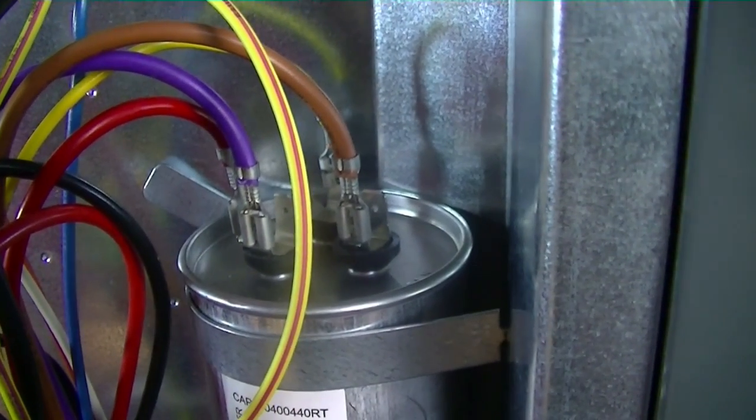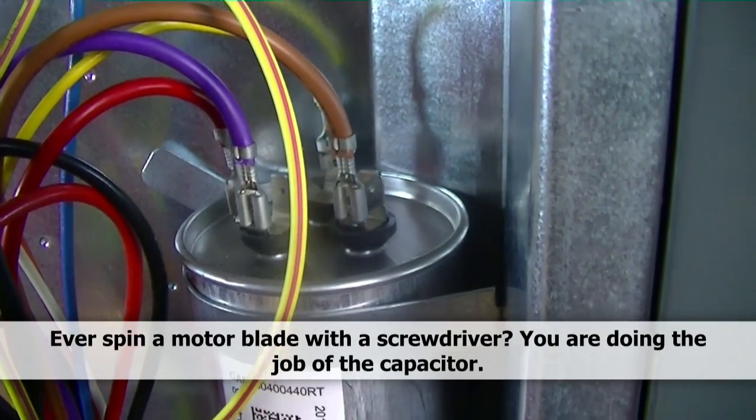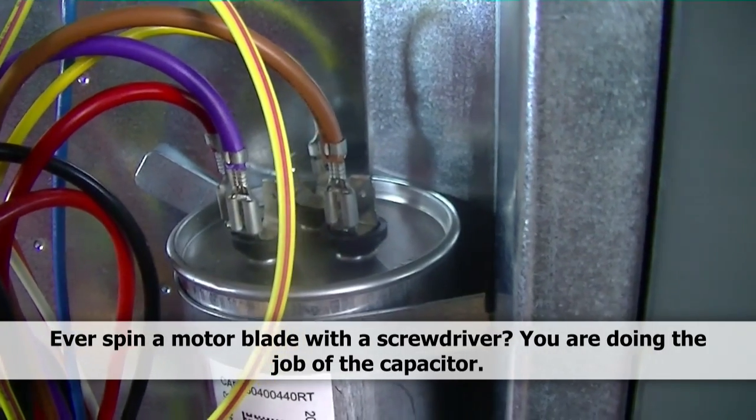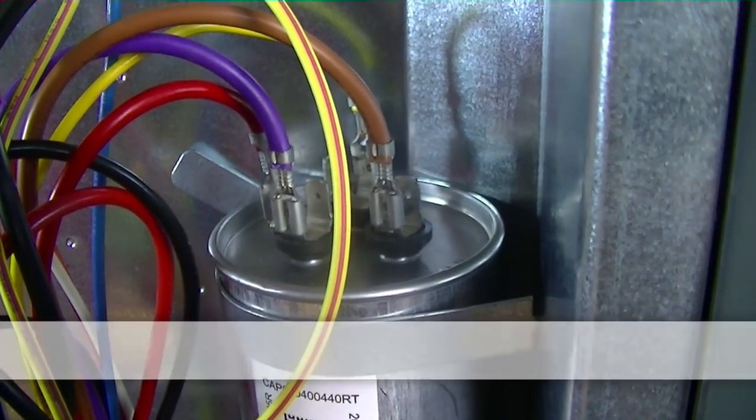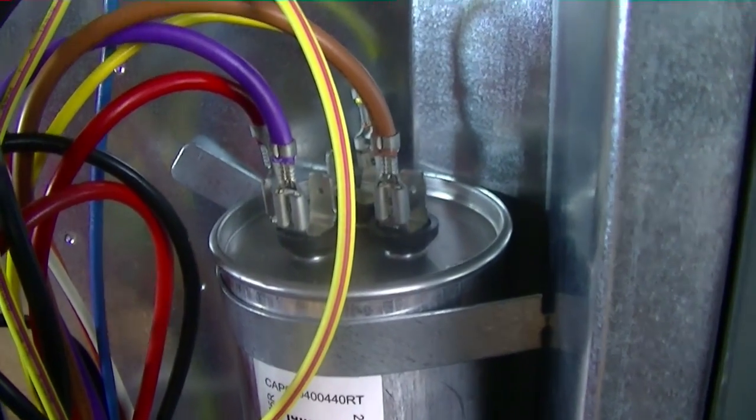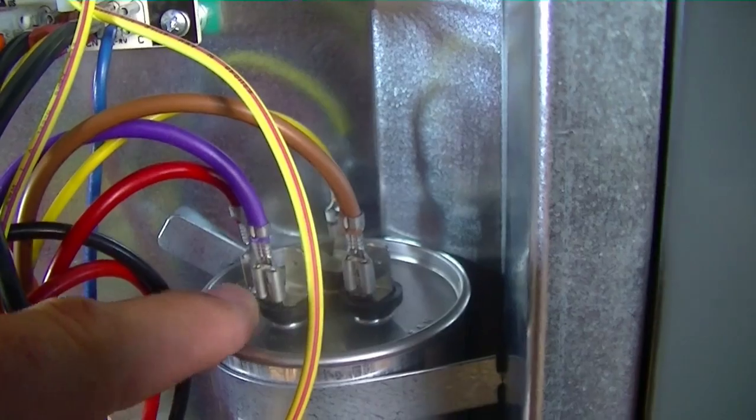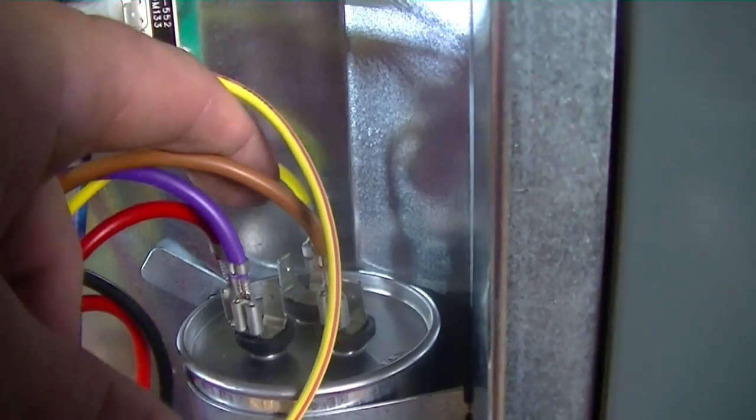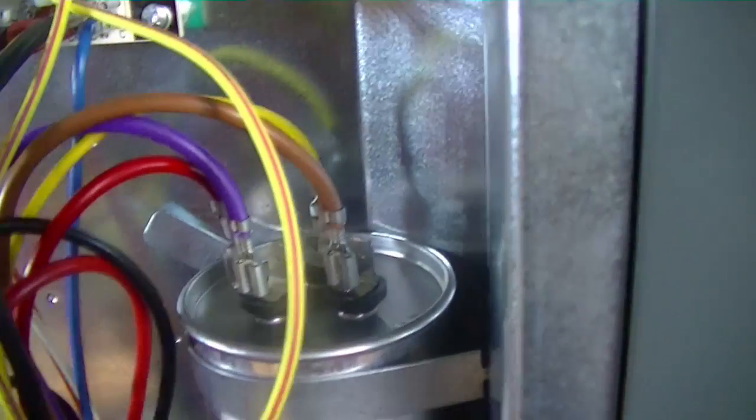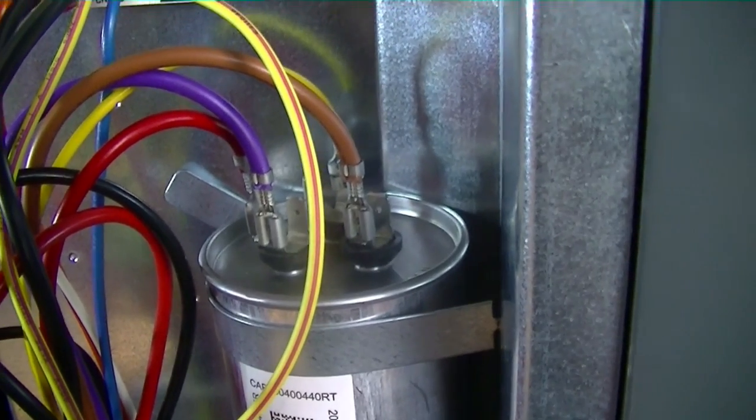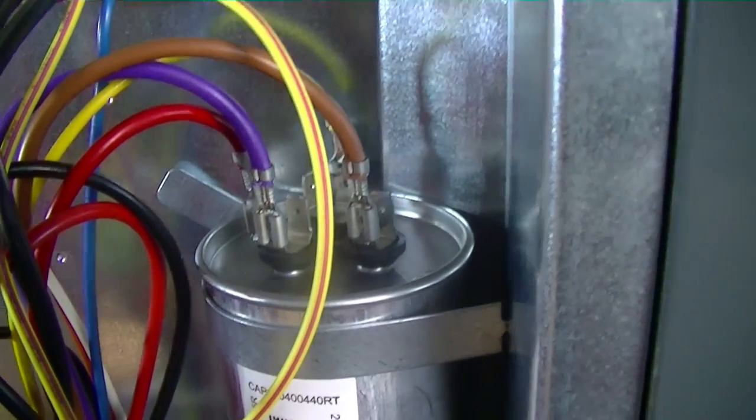If the capacitor is weak, the fan motor may turn at a lower RPM or not start at all. If the compressor side is weak, since we're talking about dual run with a shared common terminal and a dual run capacitor, sort of a run capacitor for the compressor and a run capacitor for the fan motor. If the compressor side is weak, generally the compressor does not start at all.